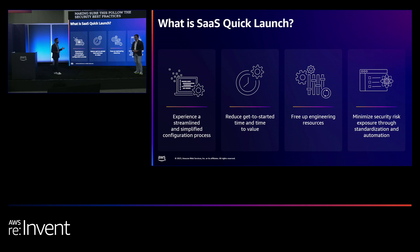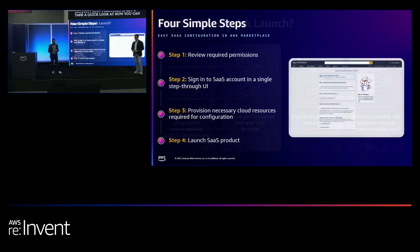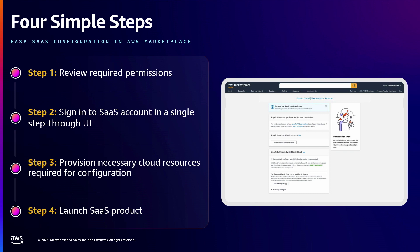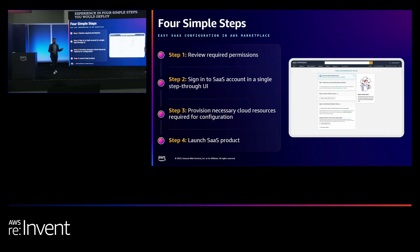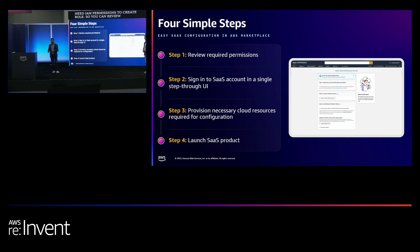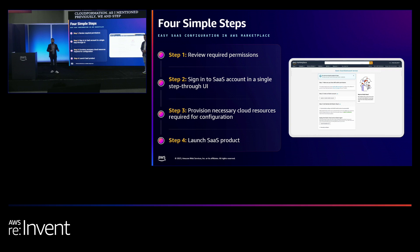Let's take a quick look at how to get started with Quick Launch in Marketplace. When Quick Launch is configured on a product, you get a guided experience — in four simple steps you would deploy the product. In step one, you can review the required permissions for deploying the product. For example, if you need to create a cross-account role, you need IAM permissions to create that role. In step two, you create an account with the SaaS vendor, which is basically registering your account with the SaaS tenant. In step three, you provision the required resources through CloudFormation. And in step four, after completing the first three steps, in one click you can launch your product.